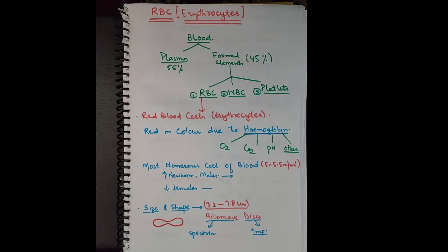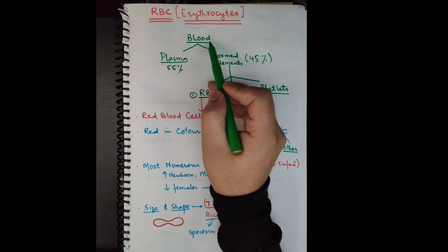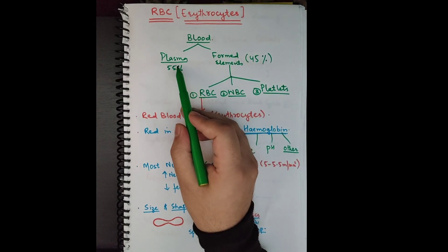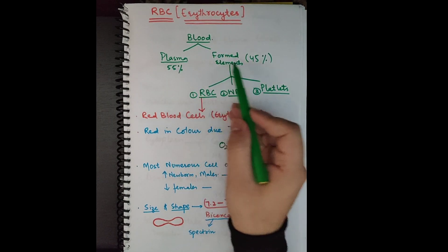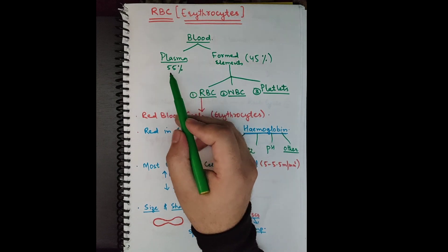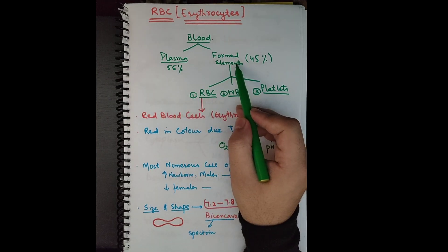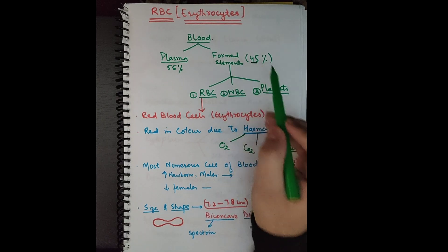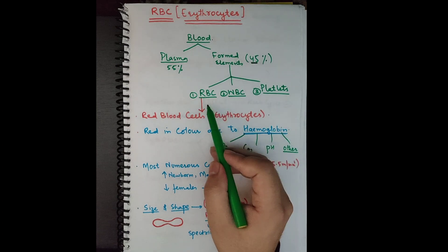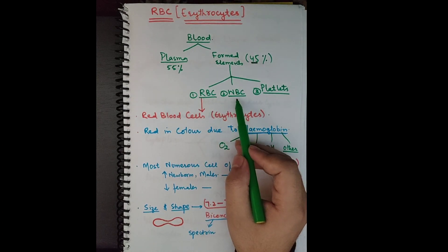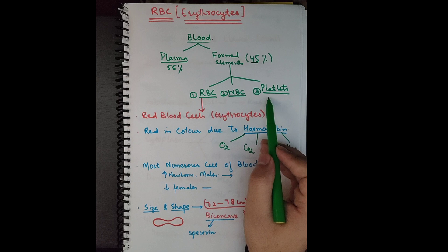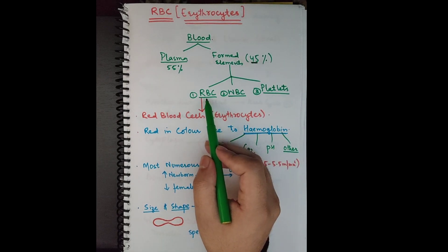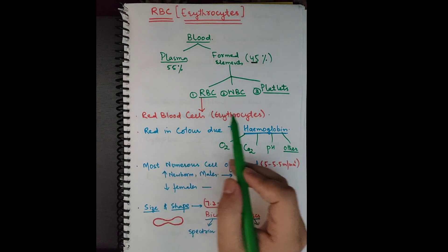Let's start with blood. Blood is made up of two components: plasma and the formed elements. Plasma, which is the fluid portion of the blood, is 55%, and formed elements, which are basically the cells, are 45%. These formed elements are of three types: red blood cells, white blood cells, and platelets. Today we are more focused on red blood cells.